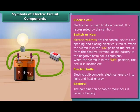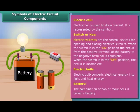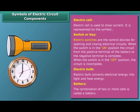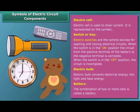The combination of two or more cells is called a battery. In a battery, the positive terminal of one cell is connected to the negative terminal of the next cell. Many devices such as torches, wall clocks and watches, toys, and TV remote controls are battery operated devices.